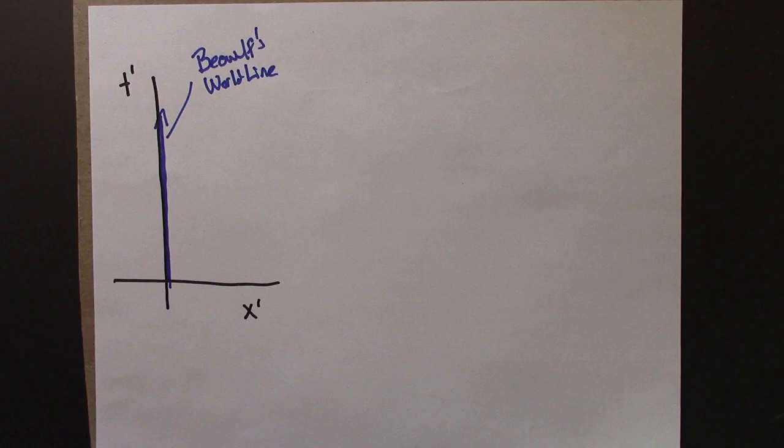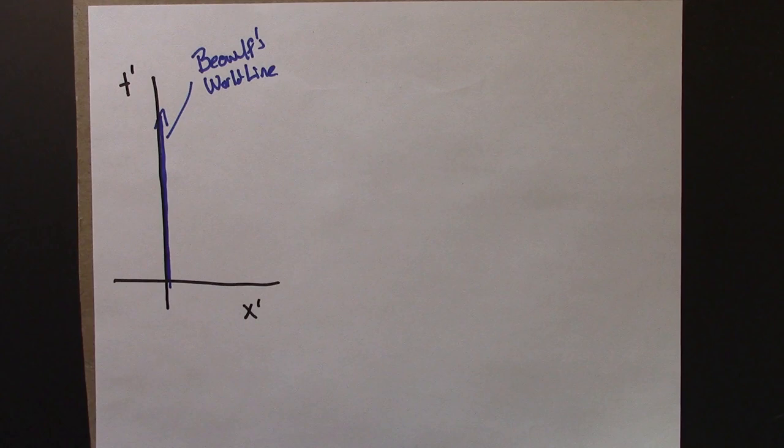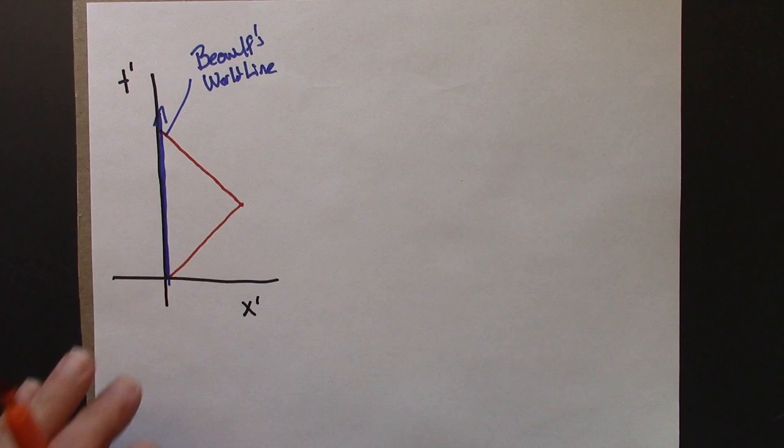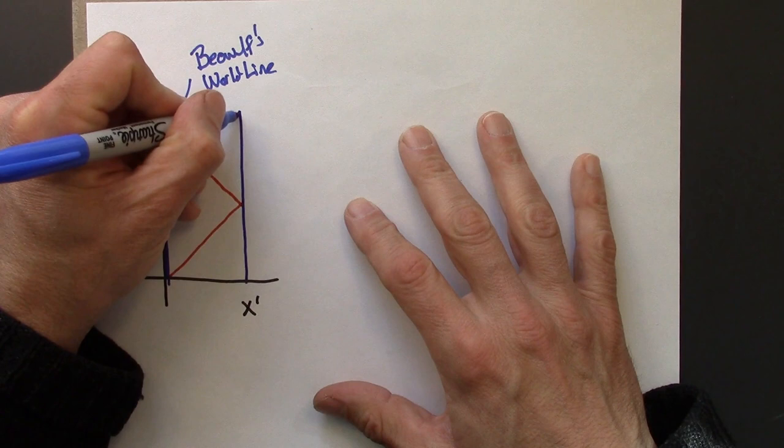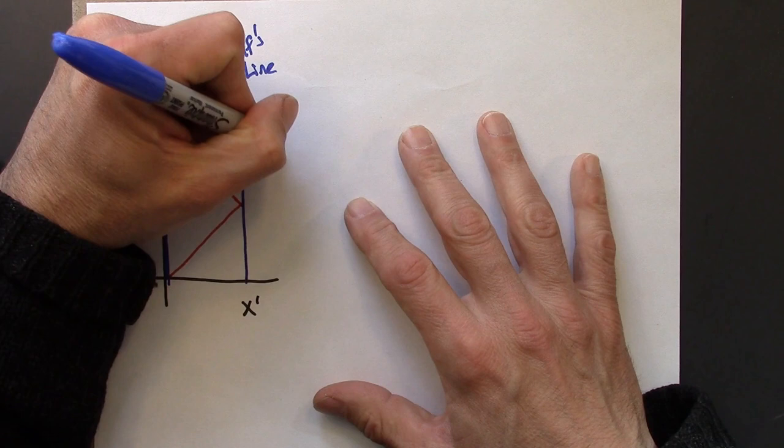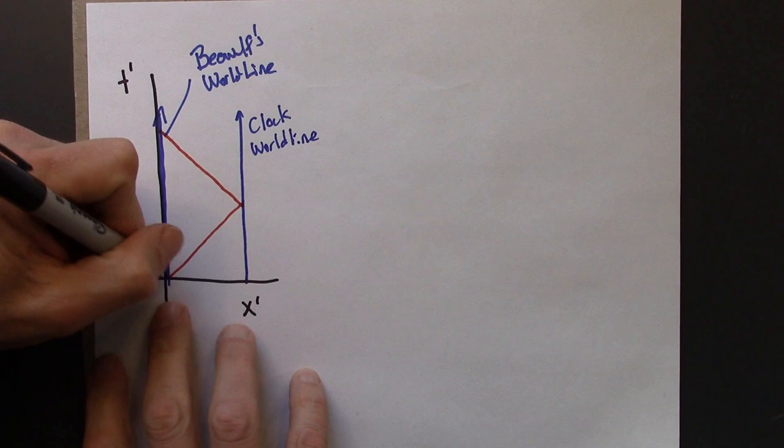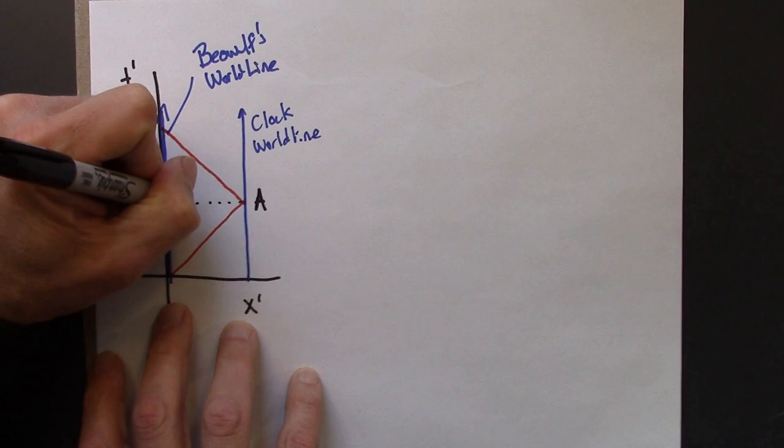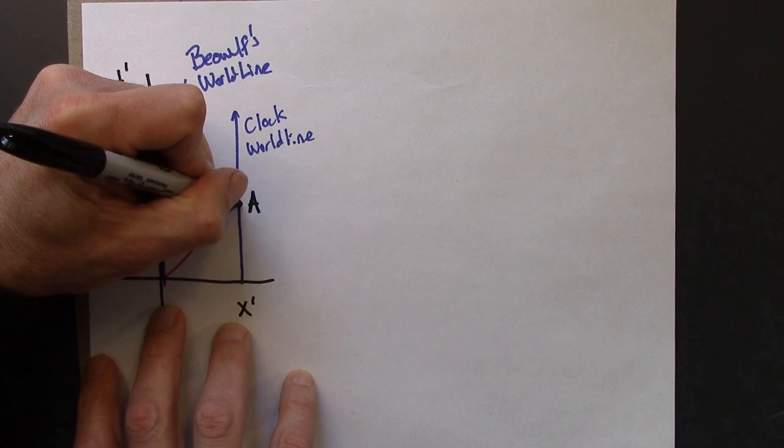And then he'll send a light pulse out. It's going to hit the clock and bounce back. So let's see, I could also draw on the, this is going to be the clock world line. And let's see, I guess let's label some events. I guess I'll just call this A, and this B.